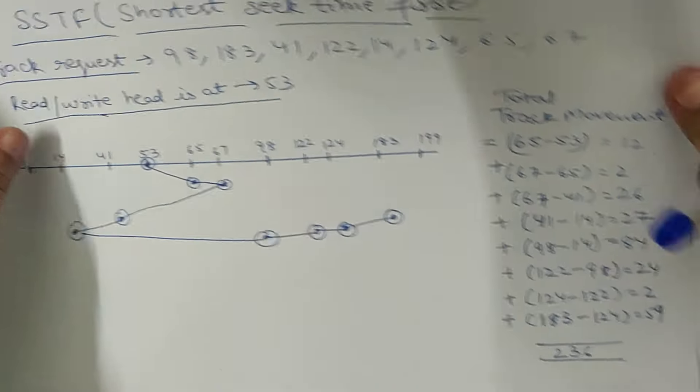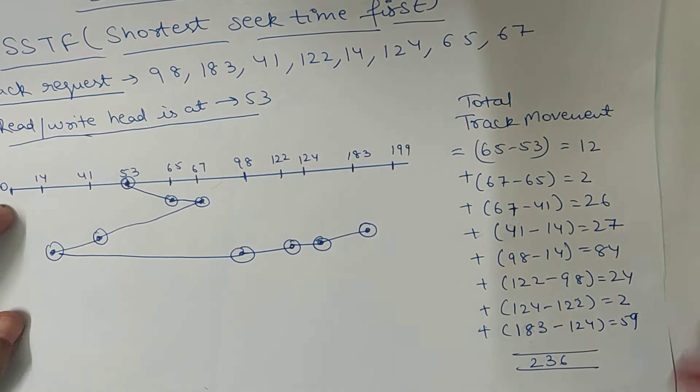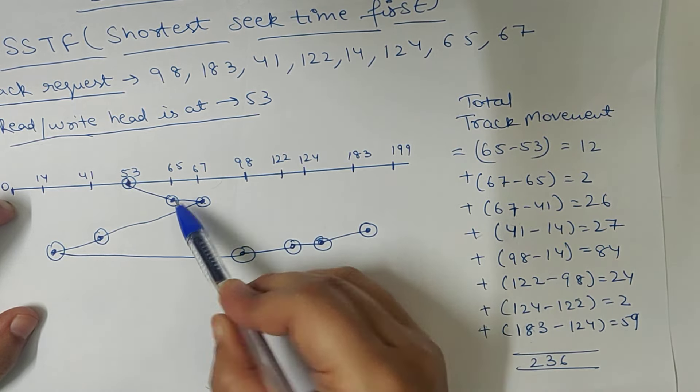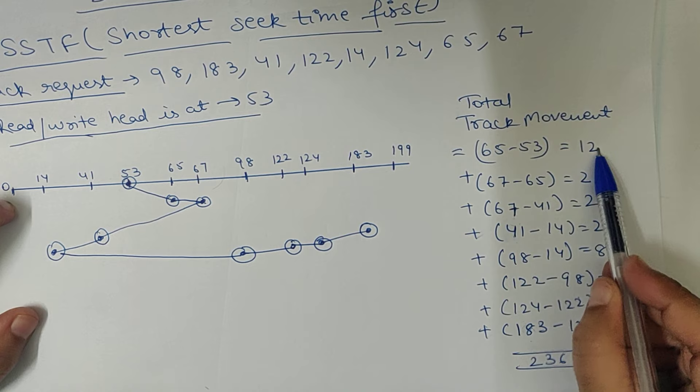So, now we have to calculate the total track movement. Initially, our read-write head, how much time did it move to 65? 65 minus 53, which is 12.